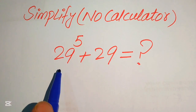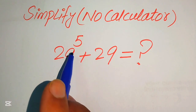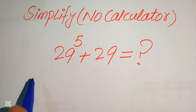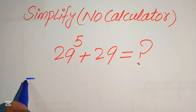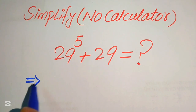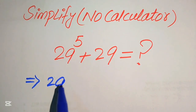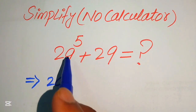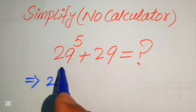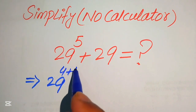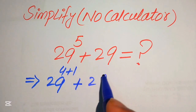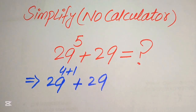So the very first step is to focus on the exponent of this term. The exponent is 5, and we rewrite 29 to the power of 5 by breaking the 5 as 4 plus 1, giving us 29 to the power of 4 plus 1, plus 29.